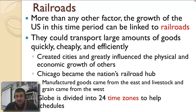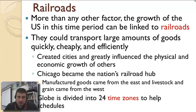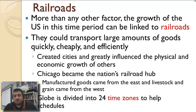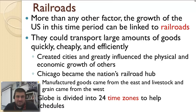More than any other factor during this time, railroads are the biggest growth factor in industrialization. They transport all the goods and inventions we make quickly, cheaply, and efficiently. This creates cities along these railroads, most notably along the Transcontinental Railroad, and greatly influences the physical and economic makeup of those cities. Chicago, for example, becomes our nation's rail hub because goods coming in from the south and west are shipped off to the east, making Chicago a major city.